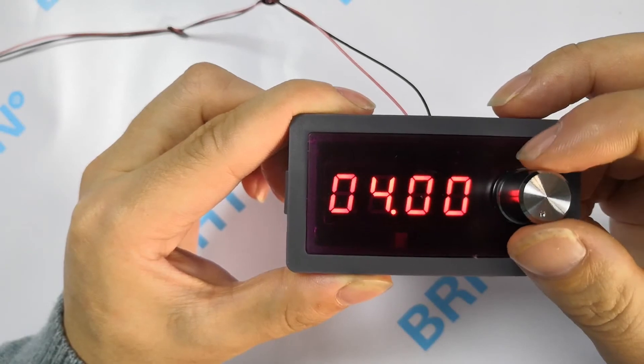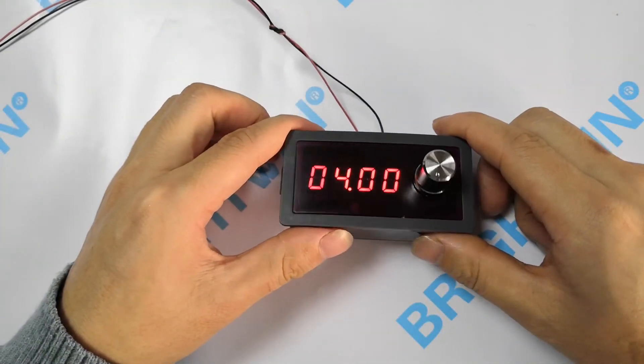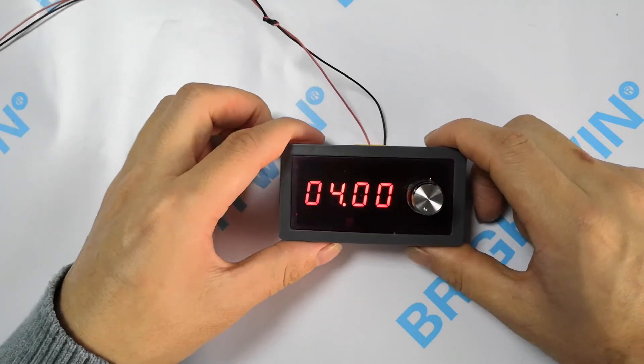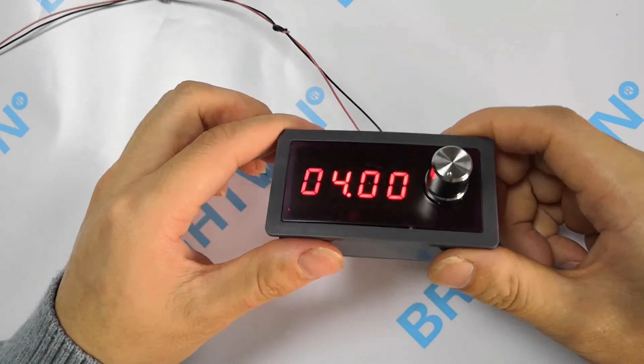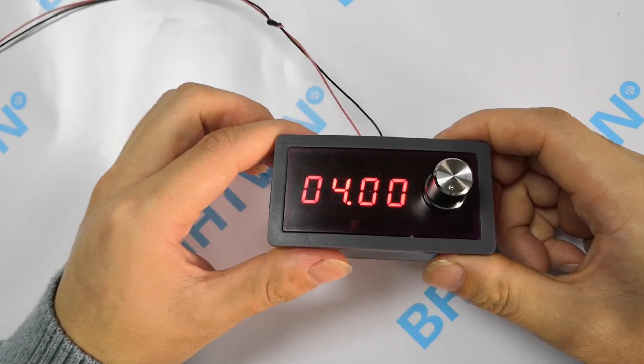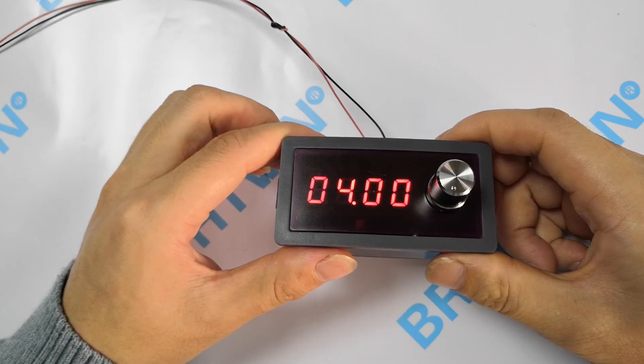All the signal generators from BrightWin Electronics have been well calibrated before shipment. You can use it directly without any calibration. If you need calibration, please read our user manual and calibrate it by following our instructions.